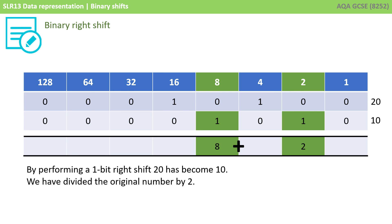Just like the shift to the left, we don't have to shift to the right by just one bit at a time. As we can see, binary left and right shift can be used to multiply and divide binary numbers.